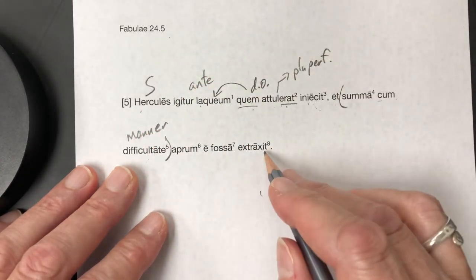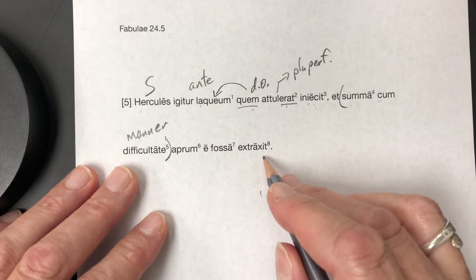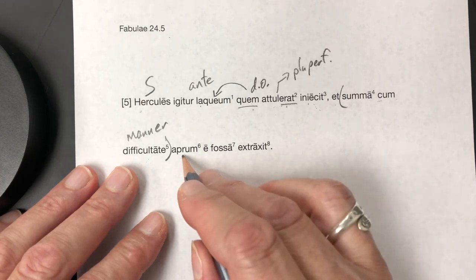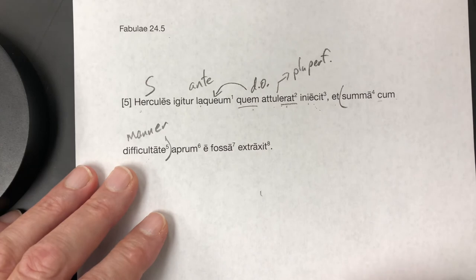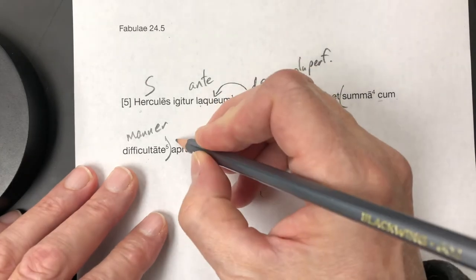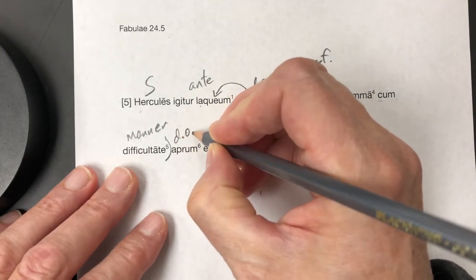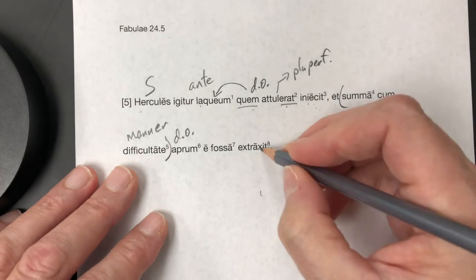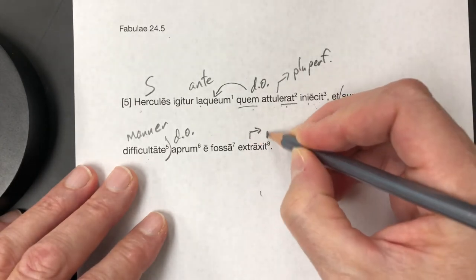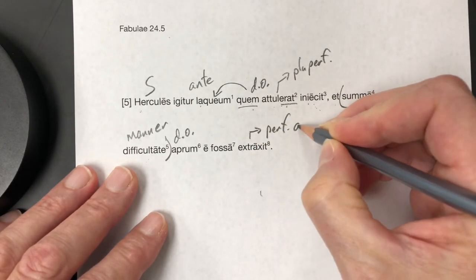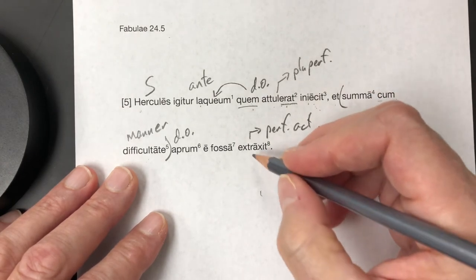Aperum afosa extracts it. He extracted Aperum, the boar, afosa, from the ditch. So Aperum is the direct object there, the D-O. Extracts it is perfect active. And Hercules is again the subject.